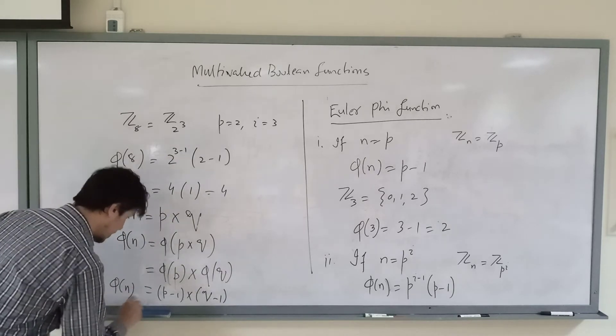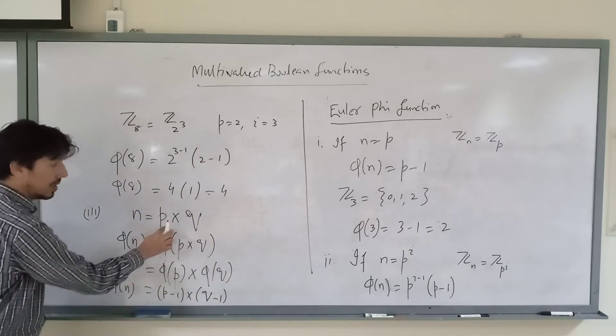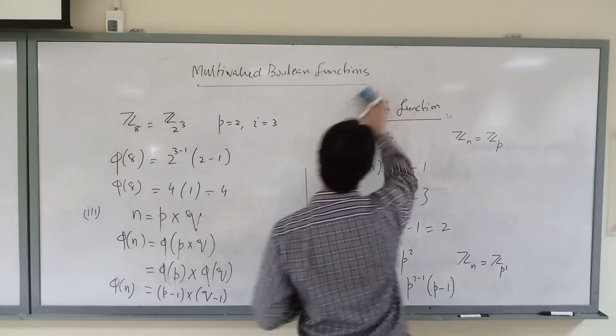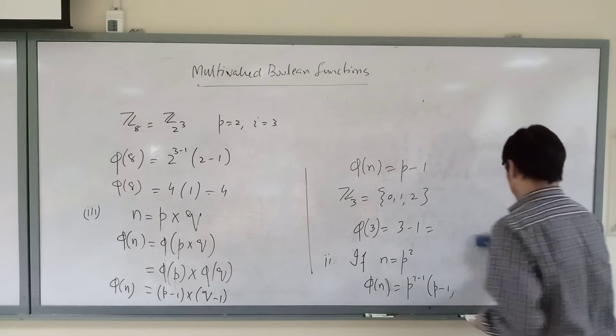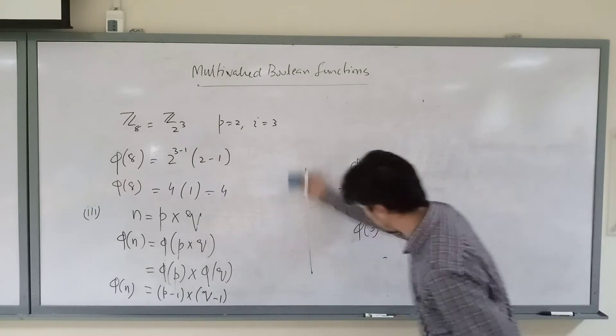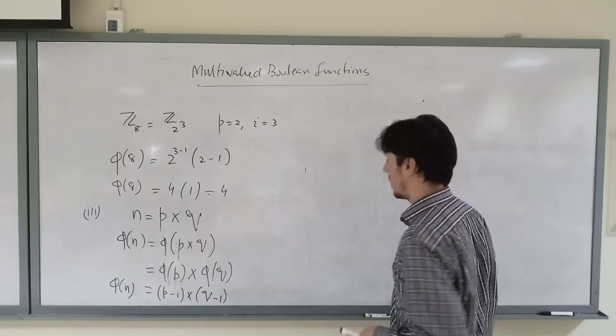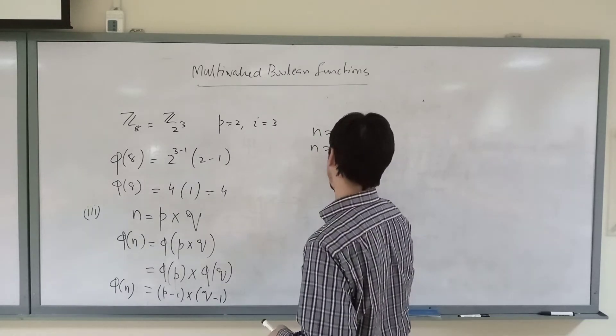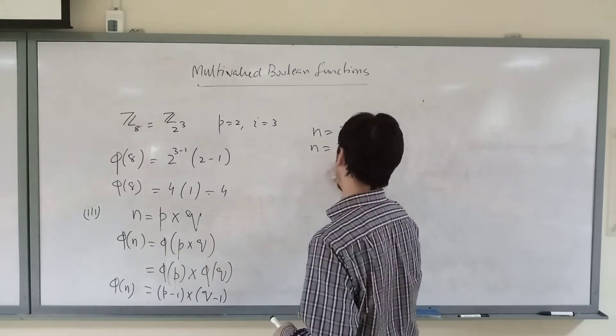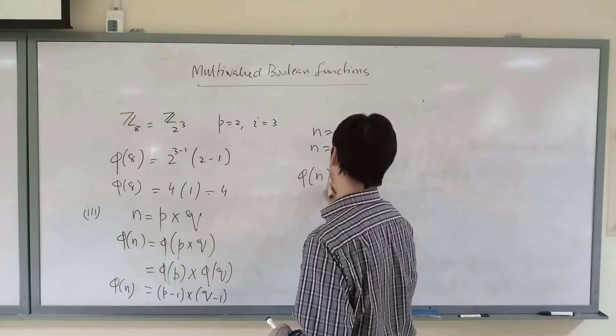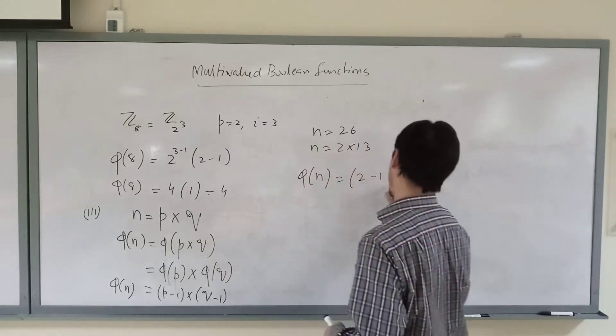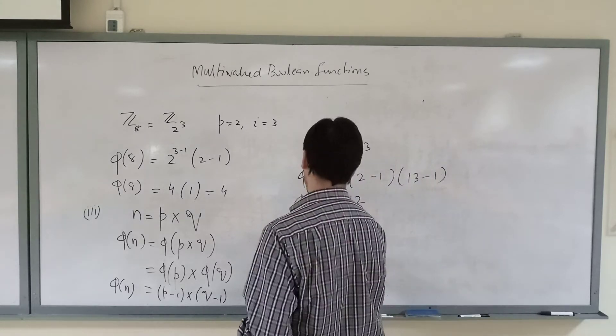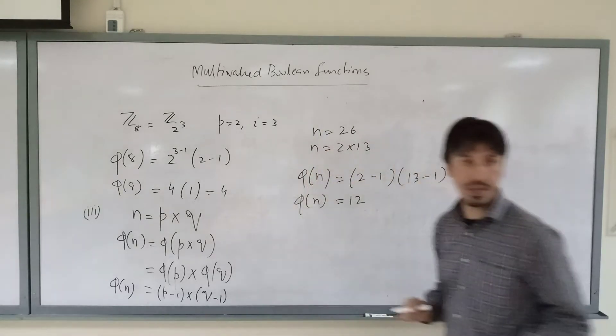When n is p into q, if I can see this one, if I take n is 26, so n can be written as 2 into 13. So phi of n in that case is 2 minus 1 and 13 minus 1, in that case I have 12 unit elements in Z 26.